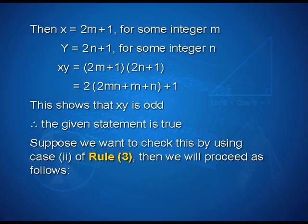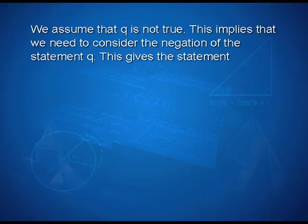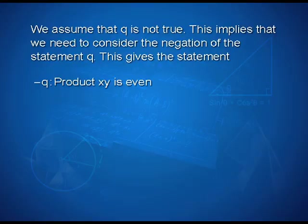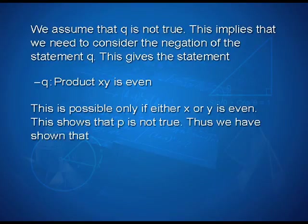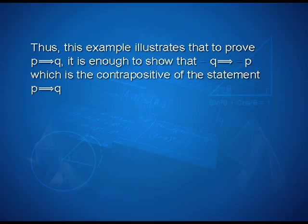Suppose we want to check this by using Case 2 of Rule 3 — the contrapositive — then we proceed as follows. We assume that q is not true, which means we consider the negation of statement q. This gives: not q — x·y is even. This is possible only if either x or y is even, which shows that p is not true. Thus, we have shown that ¬q implies ¬p, which is the contrapositive of the statement p implies q.